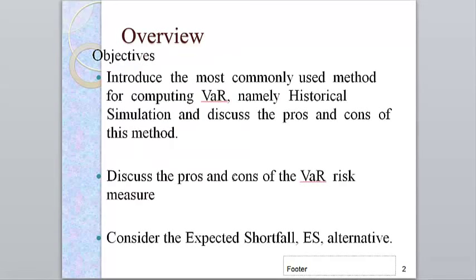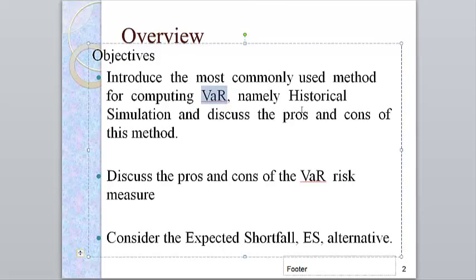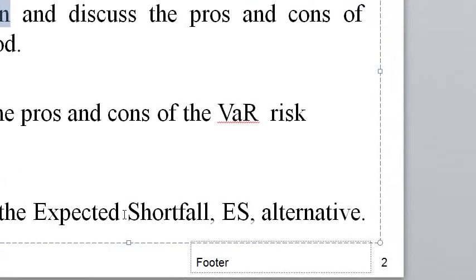The overview: in this chapter we'll see a methodology to compute value at risk, namely historical simulation. If you remember, that's the model used by JP Morgan to compute risk. We'll discuss the pros and cons of using the value at risk measure, and then introduce expected shortfall as an alternative to value at risk.